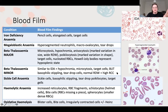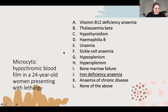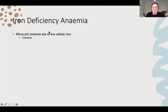Question: you've got a blood film in a 24-year-old female. She's tired and it's microcytic hypochromic. The most likely cause in a young female - and most likely cause of anaemia overall - is iron deficiency anaemia. This is microcytic because of low cellular iron. It's common, the most common anaemia and most common microcytic anaemia.